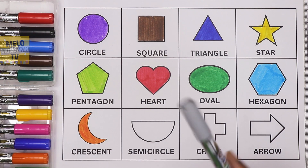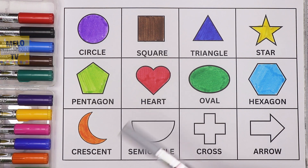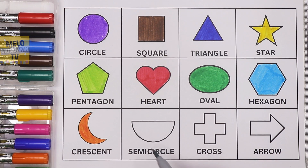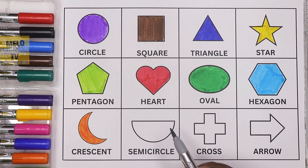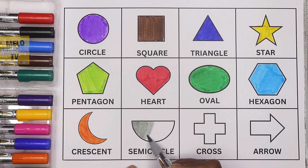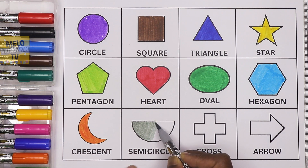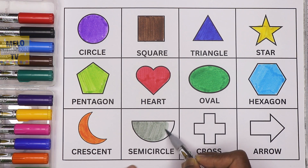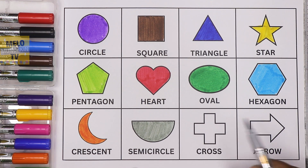Now I'll take gray color to color this shape. This is a semicircle. A semicircle is the half of a circle — that's why it is called a semicircle. So now it is a gray semicircle.